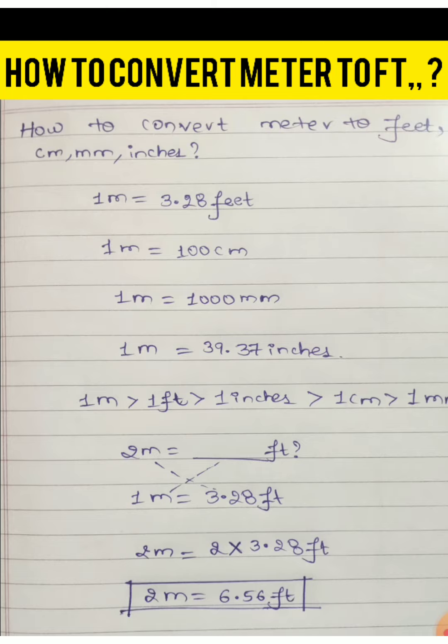meter equals 100 centimeters, and one meter equals 1000 millimeters, and one meter equals 39.37 inches. One more thing to remember is one meter will always be greater